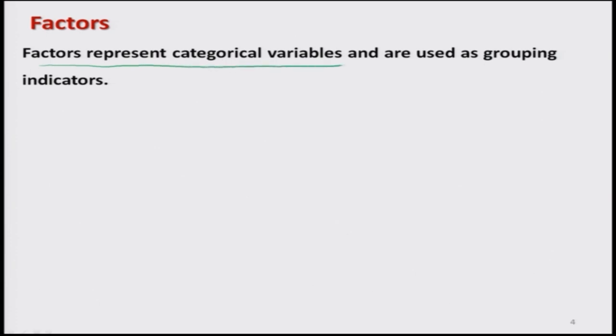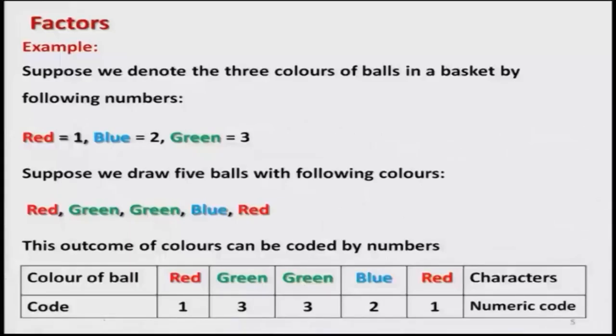Now we come to what factors are. Factors represent categorical variables and are used as grouping indicators. Whatever we have understood about categorical variables — in the language of R, this is called a factor. Now we try to understand what we really mean by factors in the context of categorical variables.